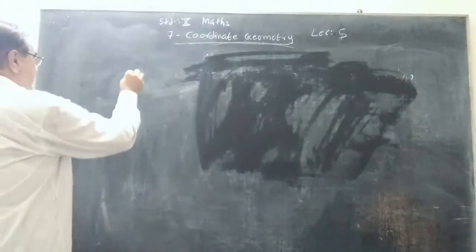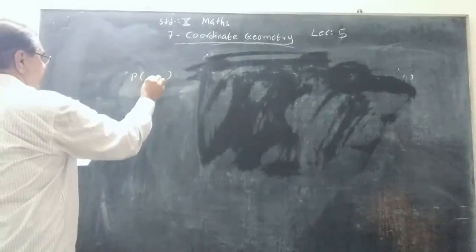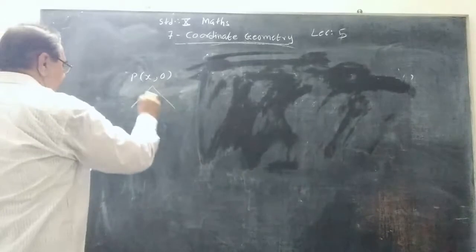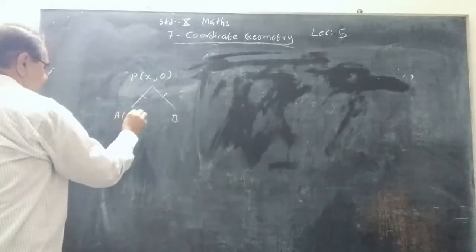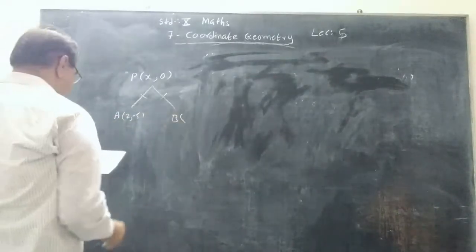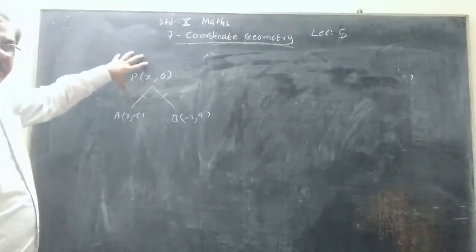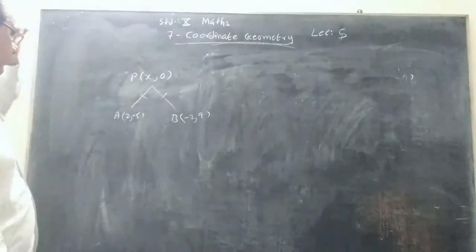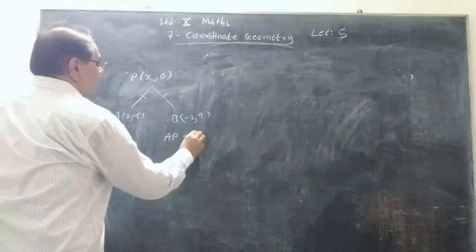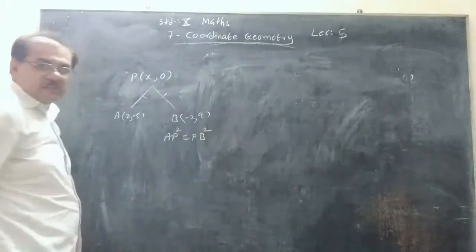We take one more kind of question. You have a point P on the x-axis. As the point is on the x-axis, y = 0, so it is (x, 0). It is lying at the same distance from two points A(2, -5) and B(-2, 9). Then what are the coordinates of this point P? We know the distance is the same, so AP = PB. To avoid the square root, I take the squares only: AP² = PB².